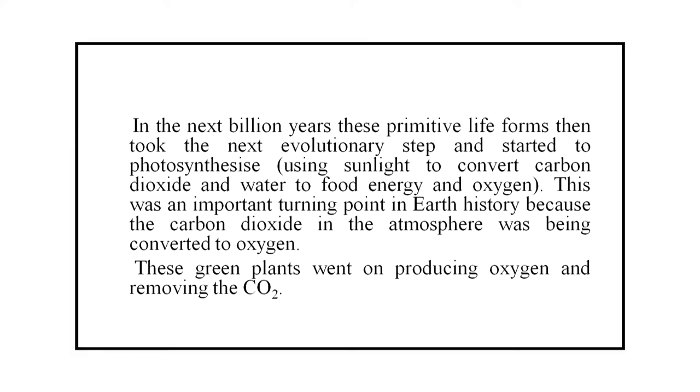In the first billion years, the Earth's surface was originally molten. The volcanoes gave out massive amounts of carbon dioxide, steam, ammonia and methane. There was no oxygen. The steam condensed to form water which then produced shallow seas. Evidence points to bacteria flourishing 3.8 million years ago. This means that life came into existence about 700 million years after the Earth was created. Such early forms of life existed in the shallow oceans. In the next billion years, these primitive life forms then took the next evolutionary step and started to photosynthesize—using sunlight to convert carbon dioxide and water to food, energy and oxygen.